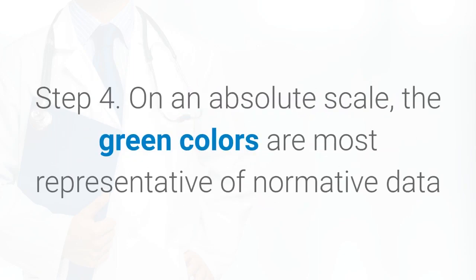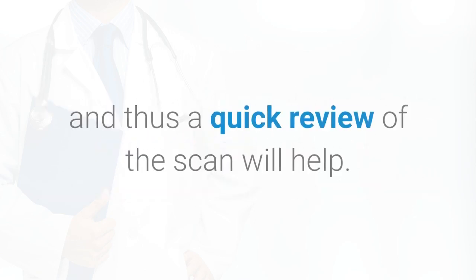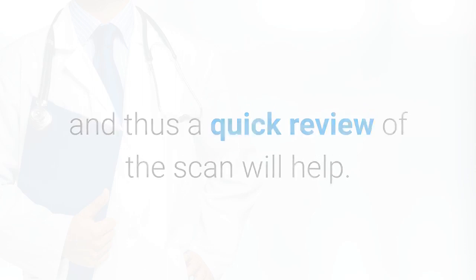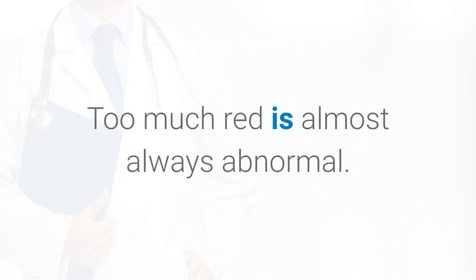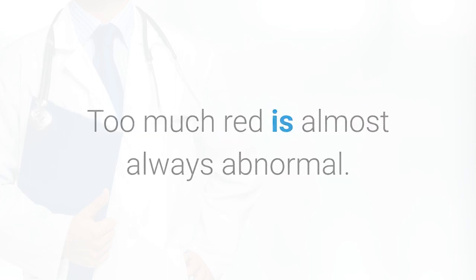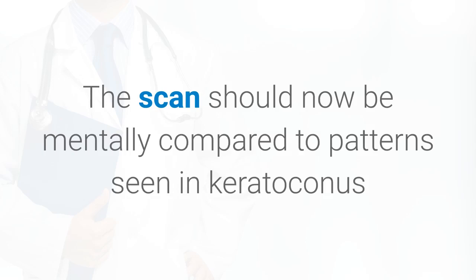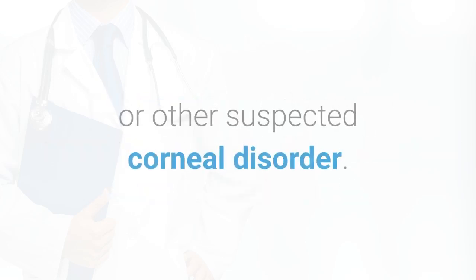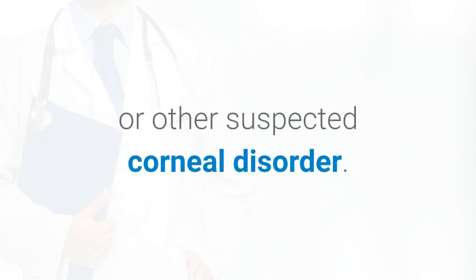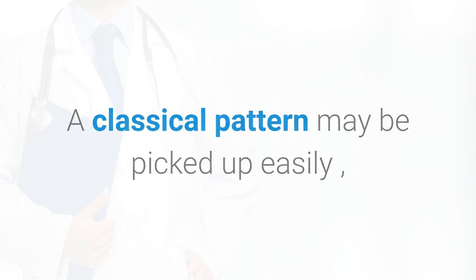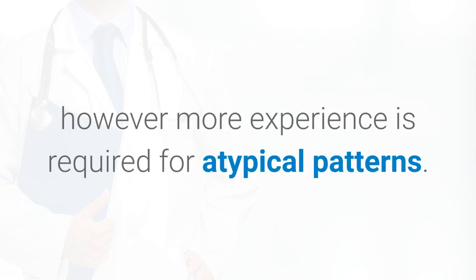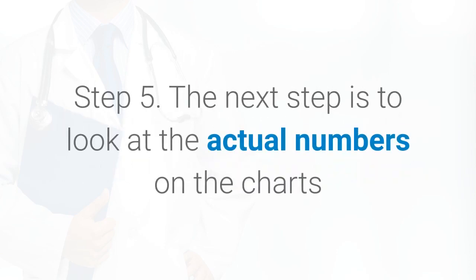Step 4: on an absolute scale, the green colors are most representative of normative data, and thus a quick review of the scan will help — too much red is almost always abnormal. The scan should now be mentally compared to patterns seen in keratoconus or other suspected corneal disorders. A classical pattern may be picked up easily; however, more experience is required for atypical patterns.